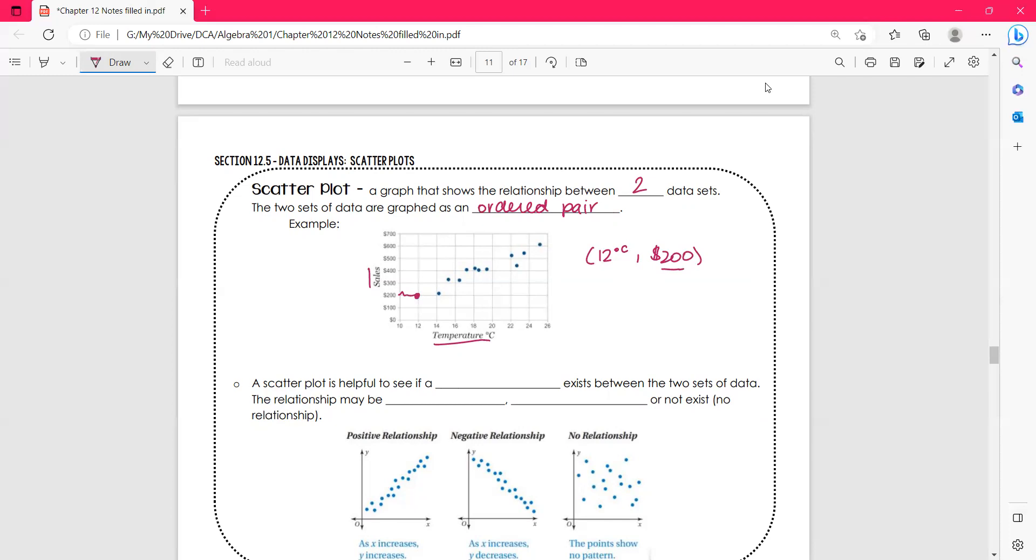A scatter plot is helpful to see if a relationship exists. We also call this a correlation. So if there's a connection between the temperature and the sales that exists between the two sets of data, the relationship may be positive, negative, or not exist, no relationship.